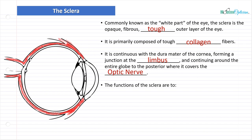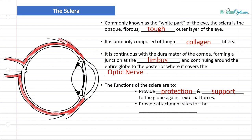Now, the functions of the sclera, here they are, are to provide protection and support to the globe against external forces. Keeps things kind of up, right? It's kind of like the bricks and mortar to a building. It keeps everything in the shape and structure that it's supposed to be. It also provides attachment sites for the extraocular muscles, the muscles of the eye that move it around. It needs to attach somewhere, and they attach to the sclera.